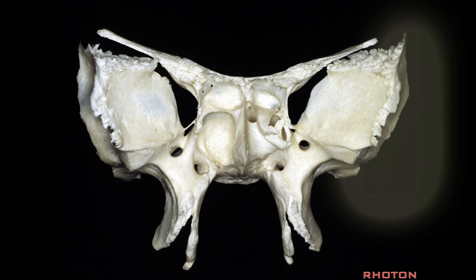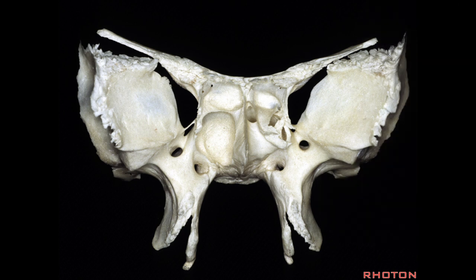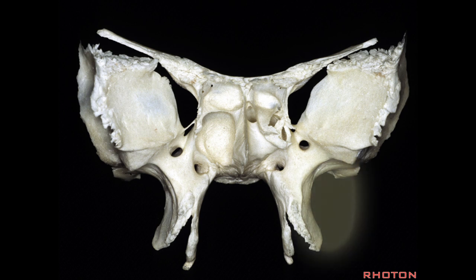The temporalis muscle attaches in this area—this is the temporal fossa. There is an infratemporal crest, and medial to it below the greater wing is the infratemporal fossa.